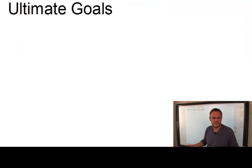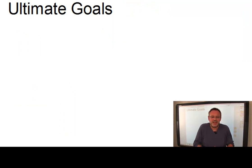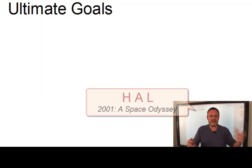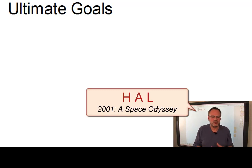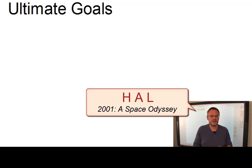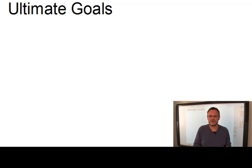The ultimate goals. Engineering efforts in human language technologies aim at sophisticated systems like HAL, which in terms of performance, flexibility and robustness are comparable to the human mind. HAL is science fiction's most famous computer — the HAL 9000, HAL for short, from the movie 2001: A Space Odyssey. Let's have a look at it.